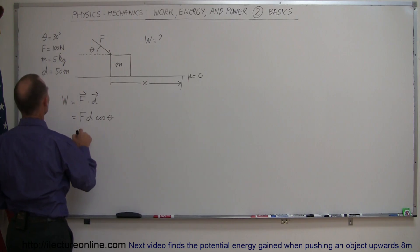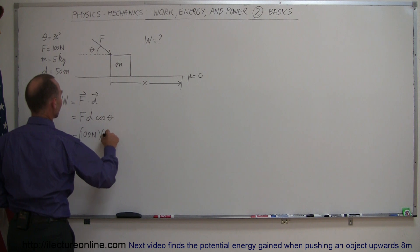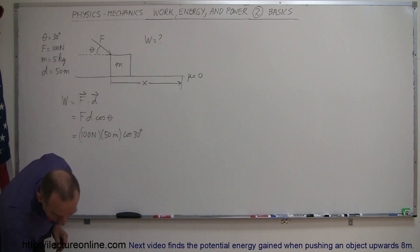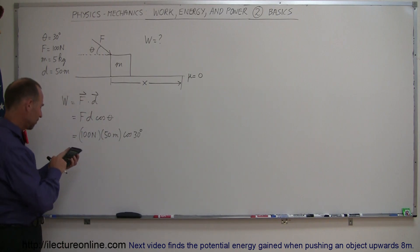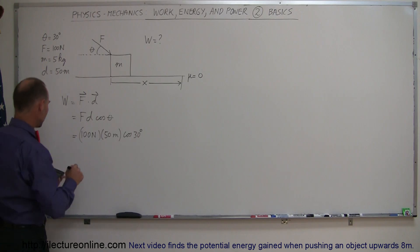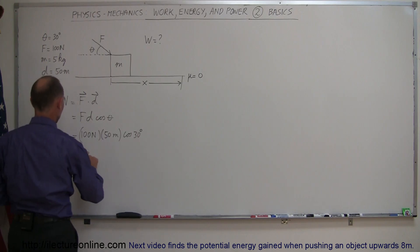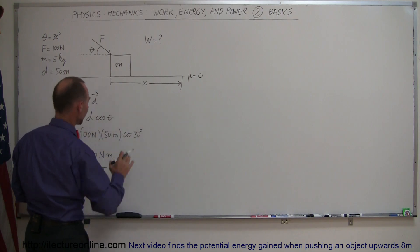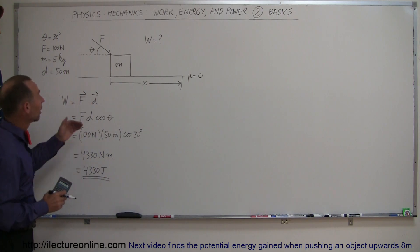So this is equal to a force of 100 newtons times the displacement of 50 meters times the cosine of 30 degrees. And then with a calculator, let's find out how much that is. So it would be 5000 times the cosine of 30 equals 4330 newton meters. And remember, a newton meter is a joule, so this is 4330 joules. That's the work done, moving that box 50 meters like that.